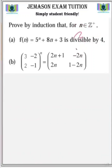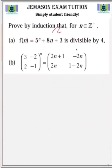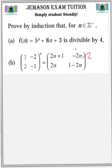Hi, in today's tutorial we are going to look at proof by mathematical induction and there are two exercises that we're going to be looking at. The question says prove by mathematical induction that for n element of z plus, the set of positive integers: (a) f of n equals 5 to the n plus 8n plus 3 is divisible by 4, and (b) the matrix [3, -2; 2, -1] to the power n equals [2n+1, -2n; 2n, 1-2n].